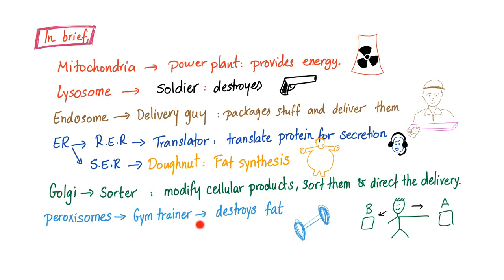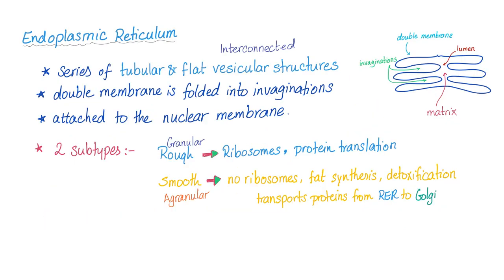Endoplasmic reticulum is a series or a network of tubular and flat vesicular structures. They are interconnected together. It has a double membrane — any membrane in biology is a double membrane — folded into invaginations, and attached to the nuclear membrane.